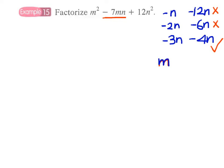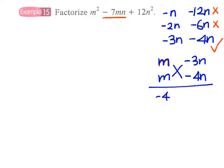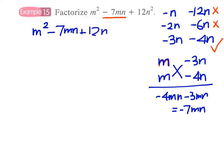We write the factors in a vertical format: (m − 3n) and (m − 4n). Cross-multiplying, we get minus 4mn and minus 3mn, which gives minus 7mn. So the answer is (m − 3n)(m − 4n).